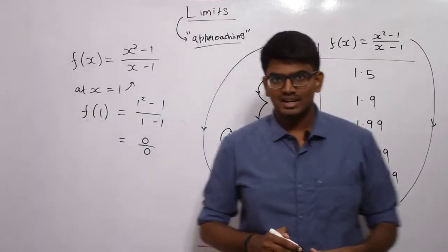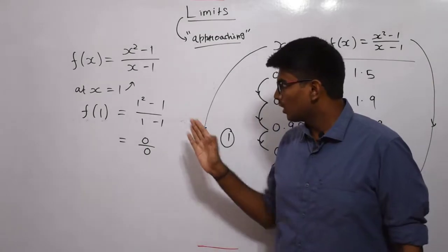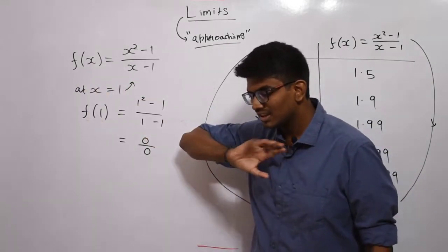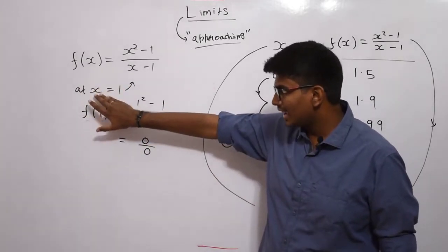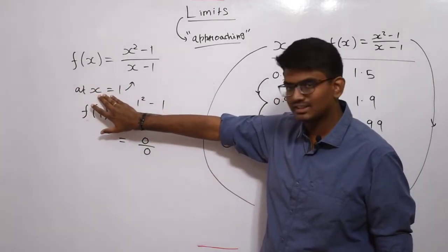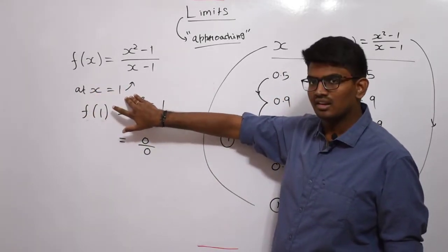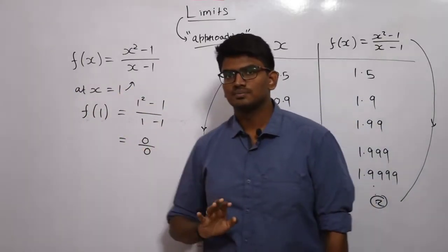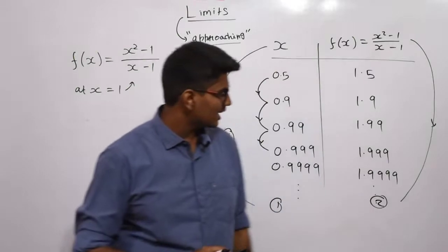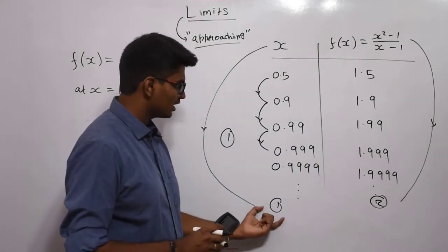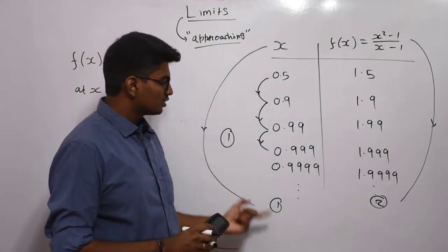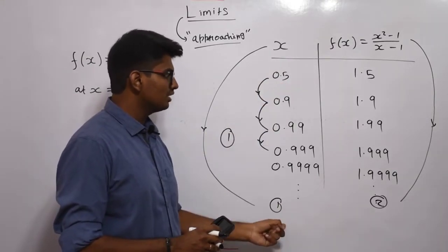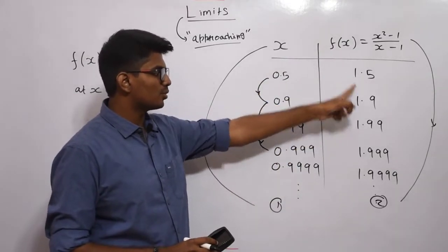To say it simply: what is the value that f(x) approaches when x approaches 1? That is my limit. In this case, I am approaching 1 from 0.5 — from the left side of x=1. So if x approaches from 0.5 to 1, my f(x) is approaching from 1.5 to 2.